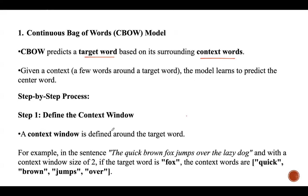The process is step by step. Step one is to define the context window. A context window is defined around the target word, specifying how many words before and after the target word will be considered as context. For example, in 'the quick brown fox jumps over the lazy dog', if 'fox' is the target word and the context window size is 2, then the context words are 'quick', 'brown', 'jumps', and 'over' — two words before and two words after.